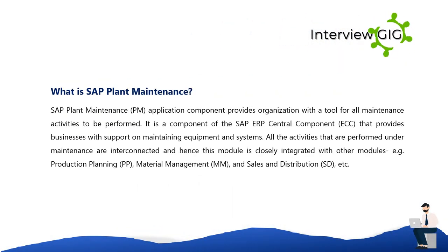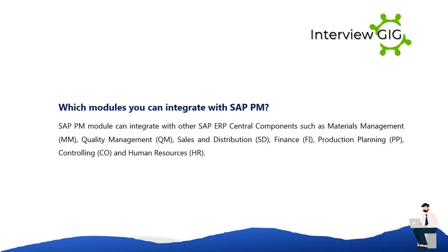What is SAP Plant Maintenance? SAP Plant Maintenance (PM) application components provides organizations with a tool for all maintenance activities to be performed. It is a component of the SAP ERP Central Component (ECC) that provides businesses with support on maintaining equipment and systems. All activities performed under maintenance are interconnected, and hence this module is closely integrated with other modules such as Production Planning (PP), Material Management, and Sales and Distribution (SD).